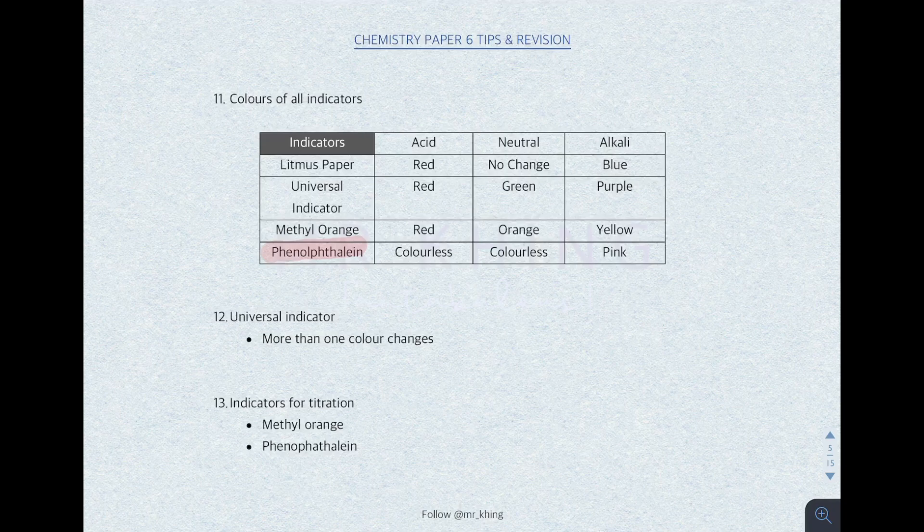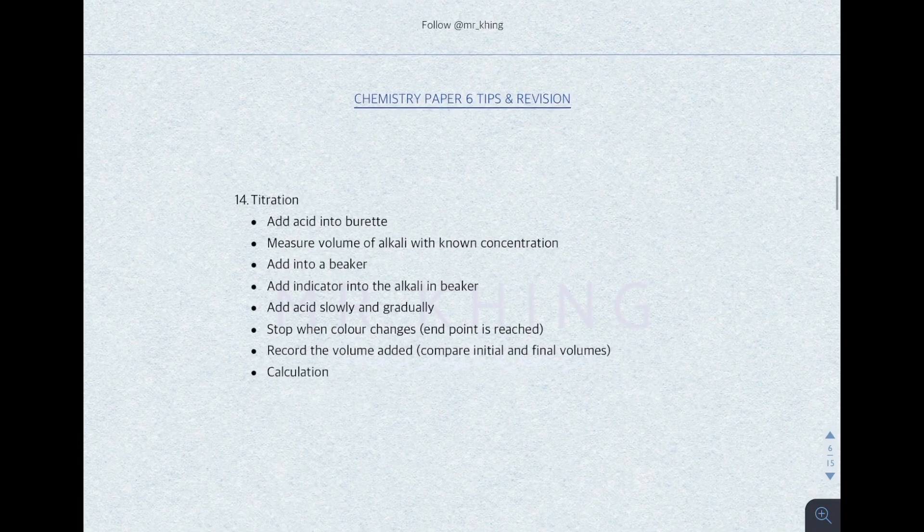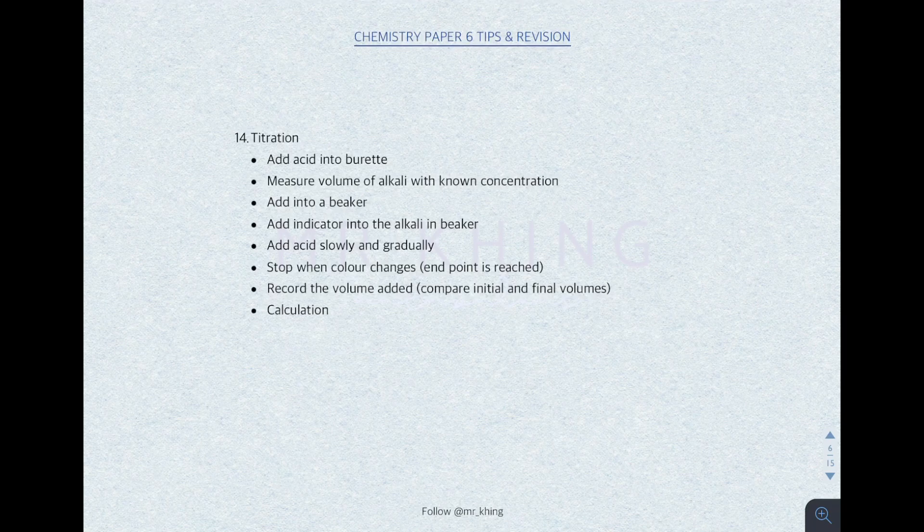Therefore, the indicators to be used for titration are always methyl orange or phenolphthalein. To carry out titration: measure the volume of alkaline and add it to the beaker, then add the indicator. Add acid slowly from the burette and stop when there is a color change — when the endpoint is reached. Record the volume by comparing the initial and final volumes on the burette, then followed by calculations.